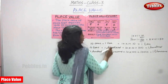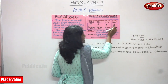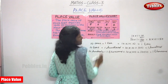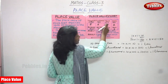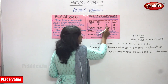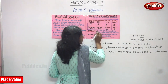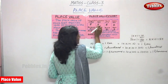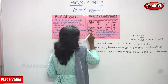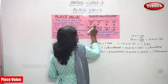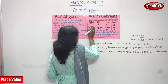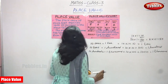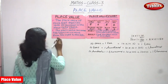For the number 5652: 2 is in the ones position. 5 is in the tens position. 6 is in the hundreds position — that means 600s. And 5 is in the thousands position — that is 1000. That is the definition of place value.